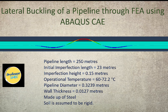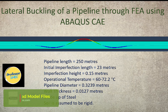The pipeline length is around 250 meters. The imperfection length, which is an initial imperfection somewhere in the middle, has a length of 23 meters. The imperfection height is 0.15 meters, and operational temperatures range from 60 to 72.2 degrees Celsius. The pipeline diameter is 0.3239 meters.